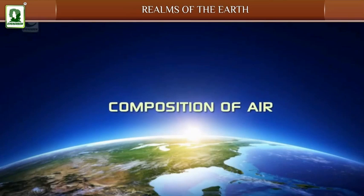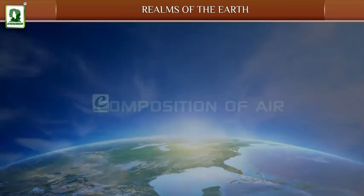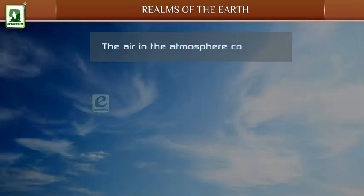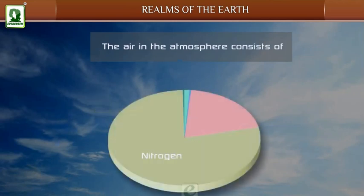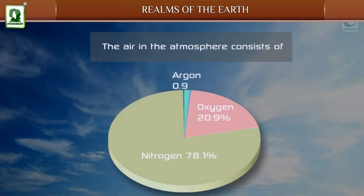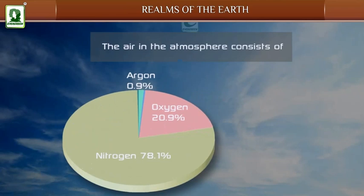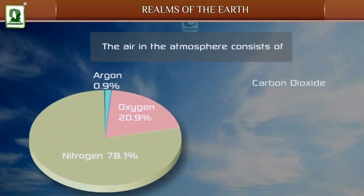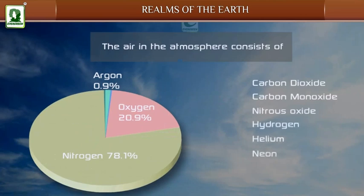Composition of air: The air in the atmosphere consists of nitrogen 78.1%, oxygen 20.9%, argon 0.9%, and traces of several other gases like carbon dioxide, carbon monoxide, nitrous oxide, hydrogen, helium, neon, ozone, and methane.